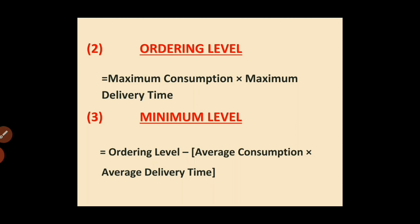Formula number three: Minimum Level equals to ordering level minus (average consumption multiplied by average delivery time). To find out the minimum level, you must first have the ordering level, because ordering level is required in this formula.